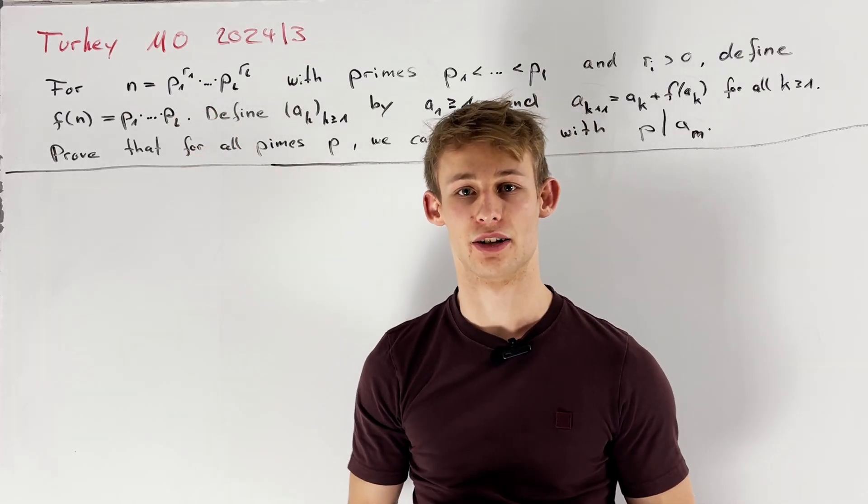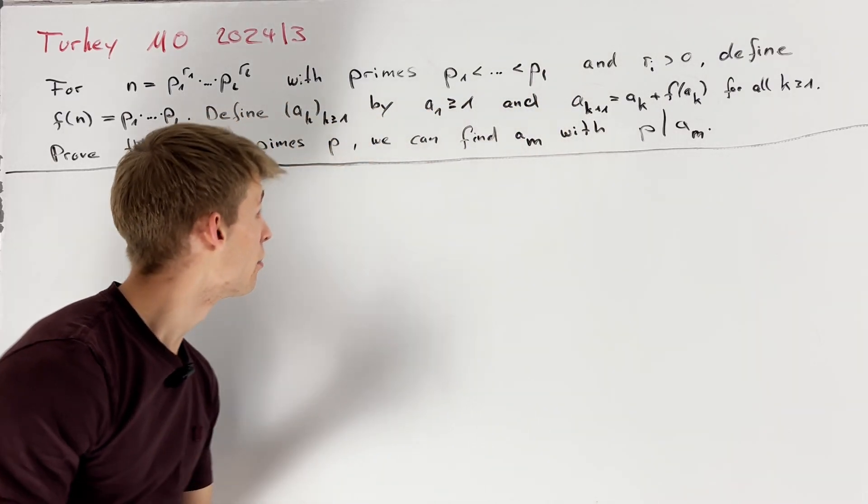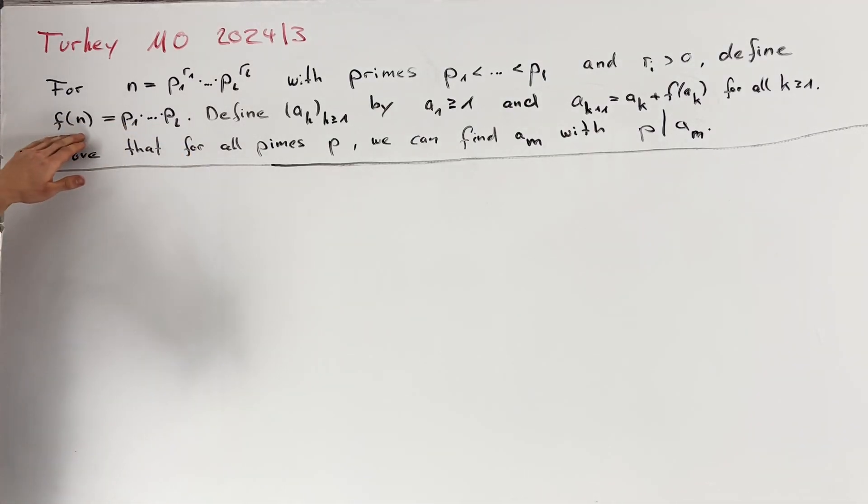First of all, let's take a look at the problem statement. We want to define a function f of n for positive integers n in such a way that f of n is equal to the product of all prime factors of n. So if p_1^r_1 up to p_l^r_l is the prime factorization of n, then f of n should be p_1 times and so on up to times p_l.